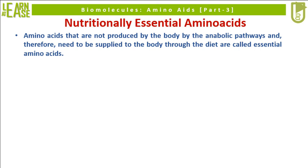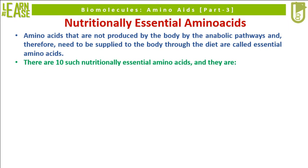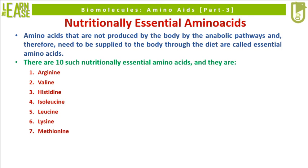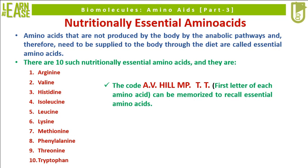Amino acids that are not produced by the body through anabolic pathways, and therefore need to be supplied through the diet, are called essential amino acids. There are 10 nutritionally essential amino acids: arginine, valine, histidine, isoleucine, leucine, lysine, methionine, phenylalanine, threonine, and tryptophan. The mnemonic AVHIL-MPTT, representing the first letter of each amino acid, can be used to recall them.